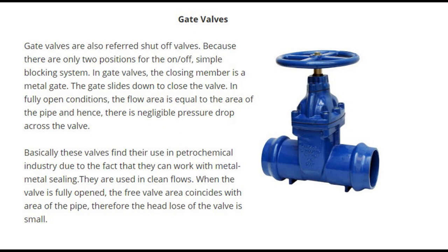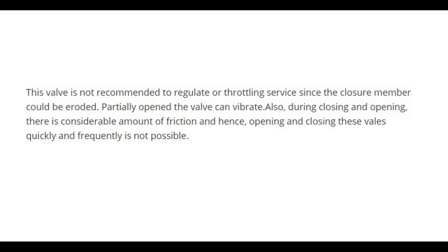Gate valves are used in petrochemical industries because they can work with metal-to-metal sealing. They are used in clean flows; when fully opened, the free valve area coincides with the area of the pipe, so head loss is small. However, they are not recommended for regulating or throttling service since the closure member could erode. A partially open valve can vibrate, and opening or closing these valves quickly and frequently is not possible due to considerable friction.